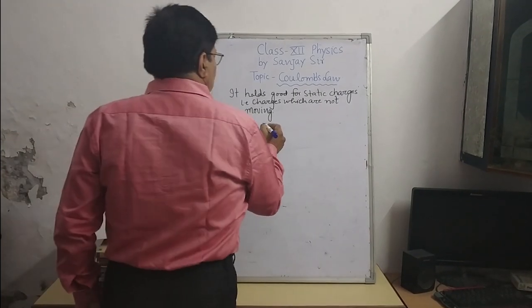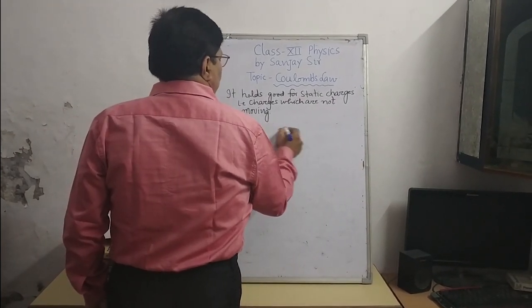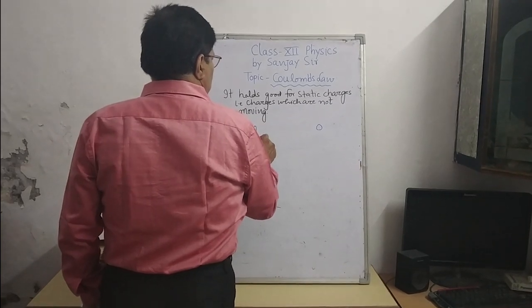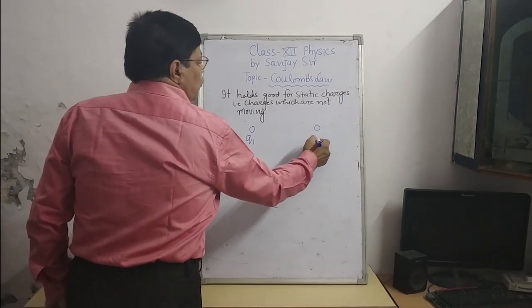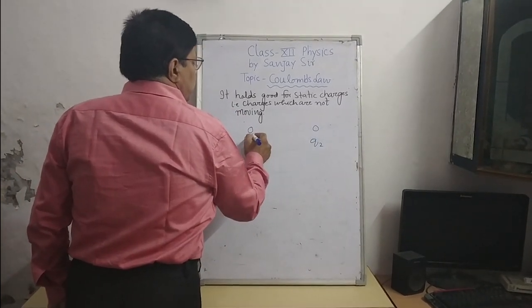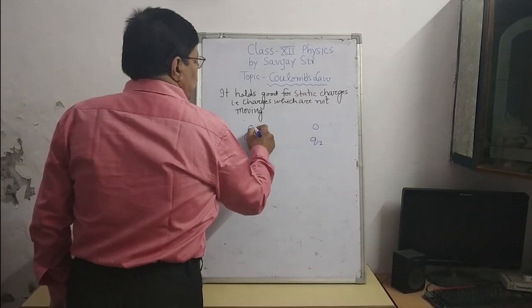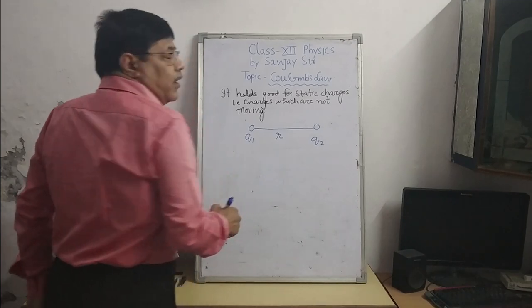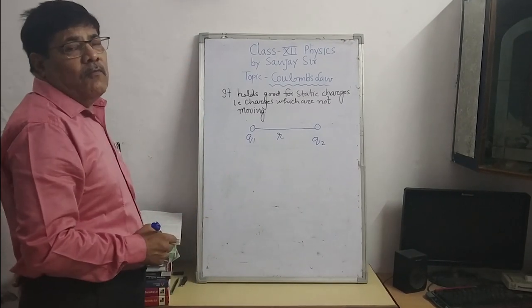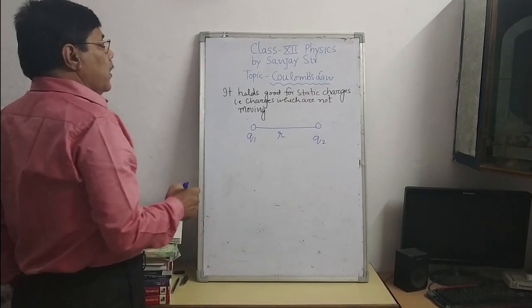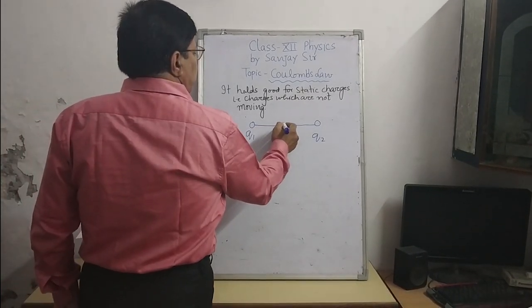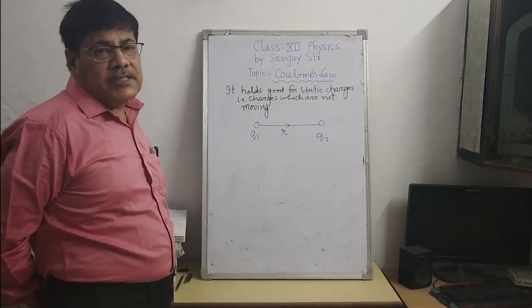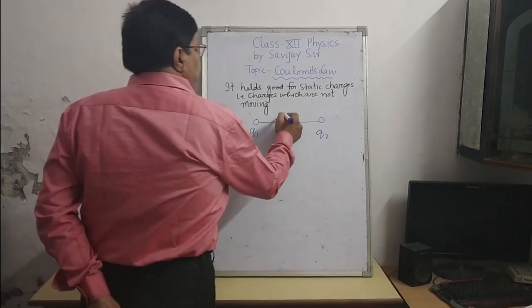According to Coulomb's law, it has two point charges, Q1 and Q2. Let us say that point charges are Q1 and Q2. If they are placed at a distance R apart from each other, then the force acting between them — either the force of attraction or repulsion — say F.